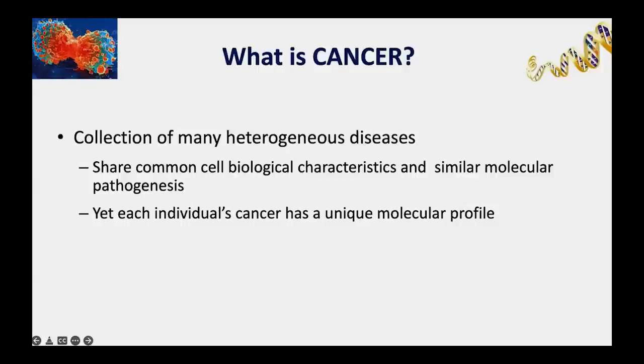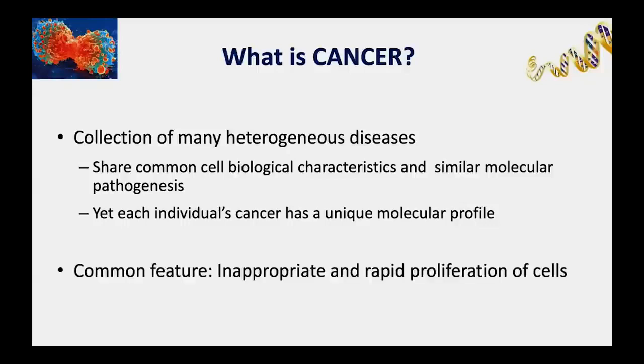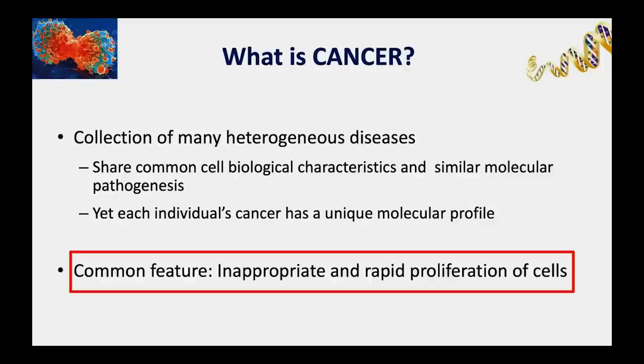What all these different heterogeneous types of cancer have in common is that they involve inappropriate cell proliferation—cells dividing when they shouldn't, more rapidly than they should, perhaps in different places, moving to different sites, and growing where they shouldn't.